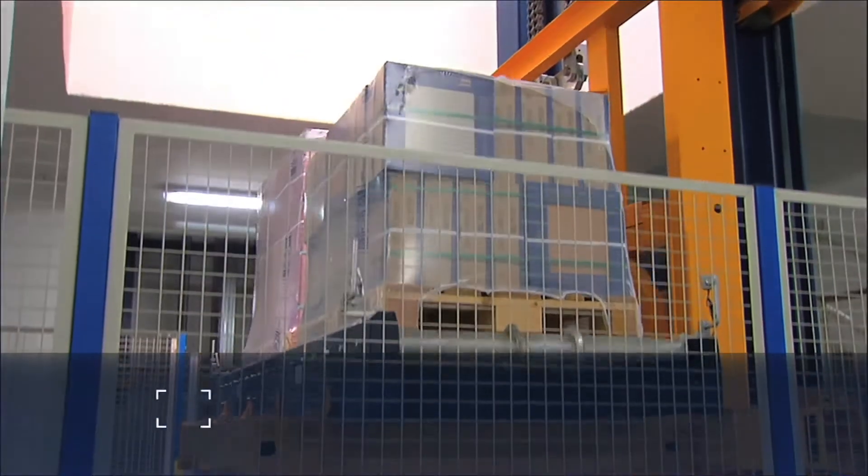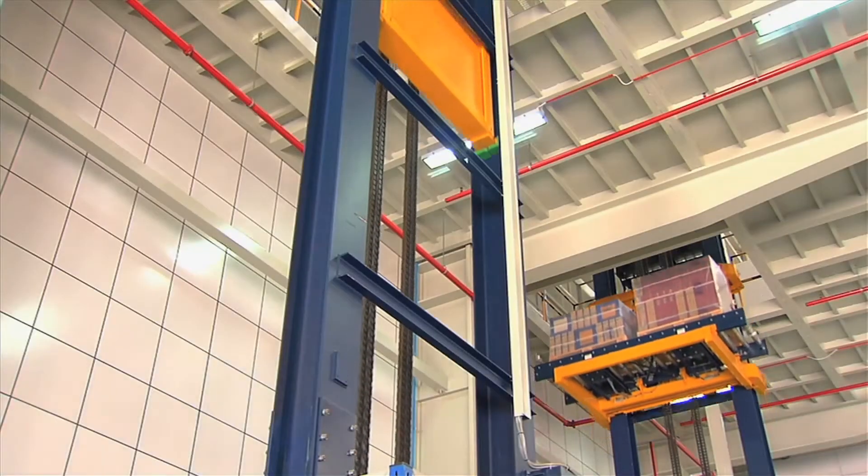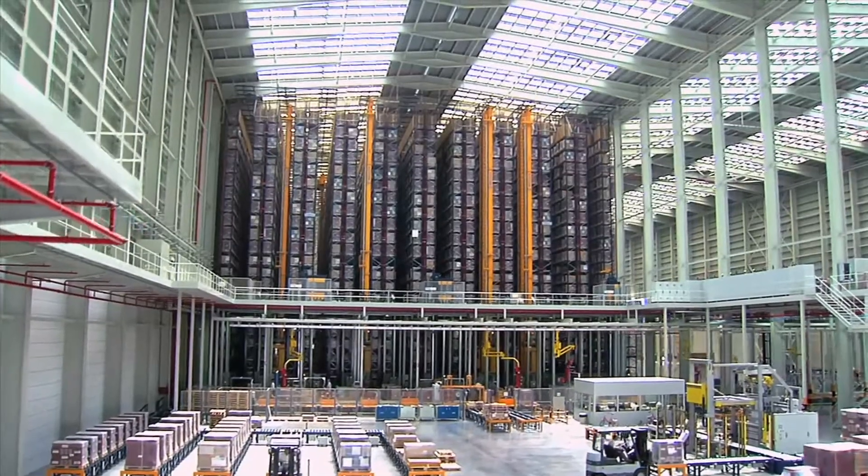Monitored along their route by Mecalux's EZ Warehouse Management software, they are lifted onto the double lifts that allow two pallets of up to 1,600 kilograms each to be loaded until they reach the aisle entrances of the store.